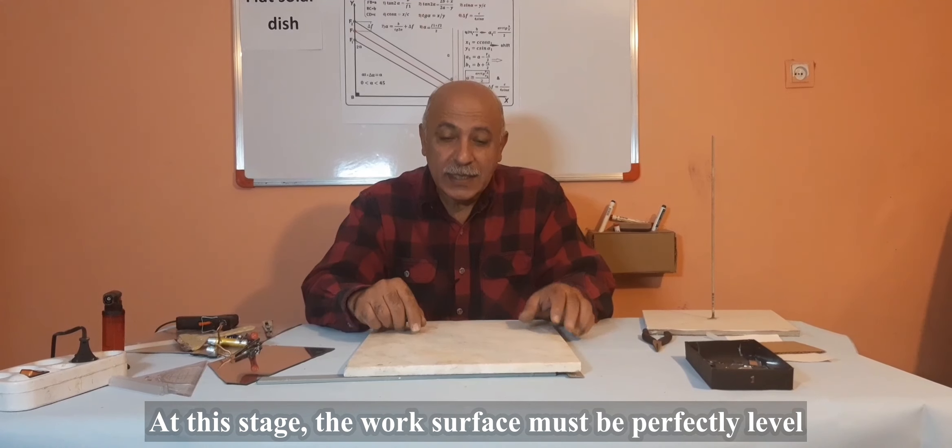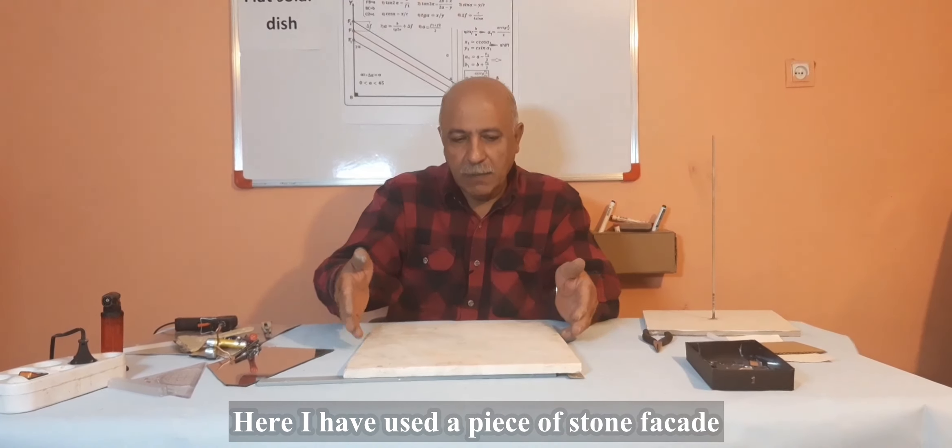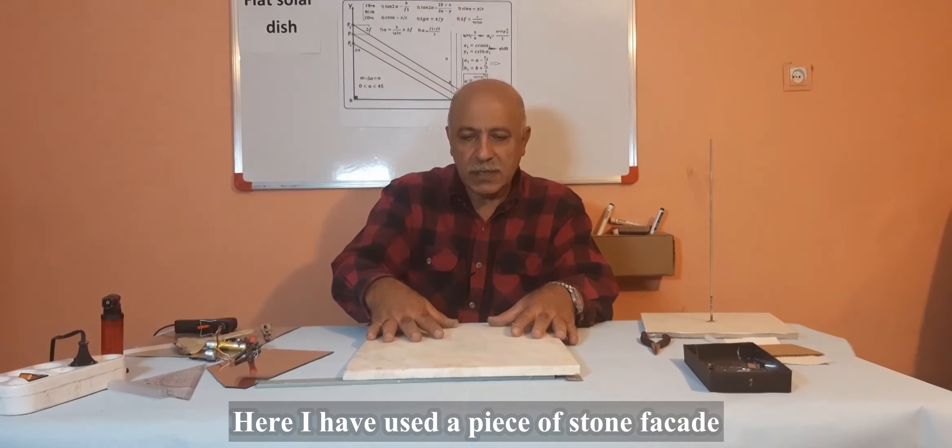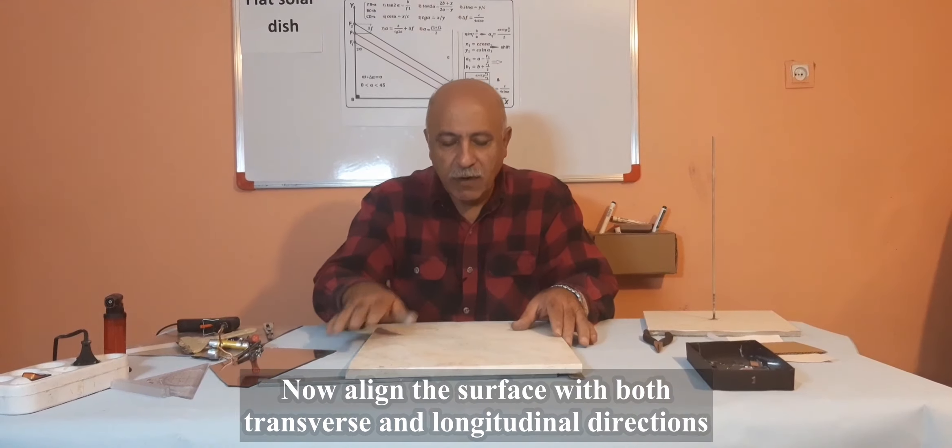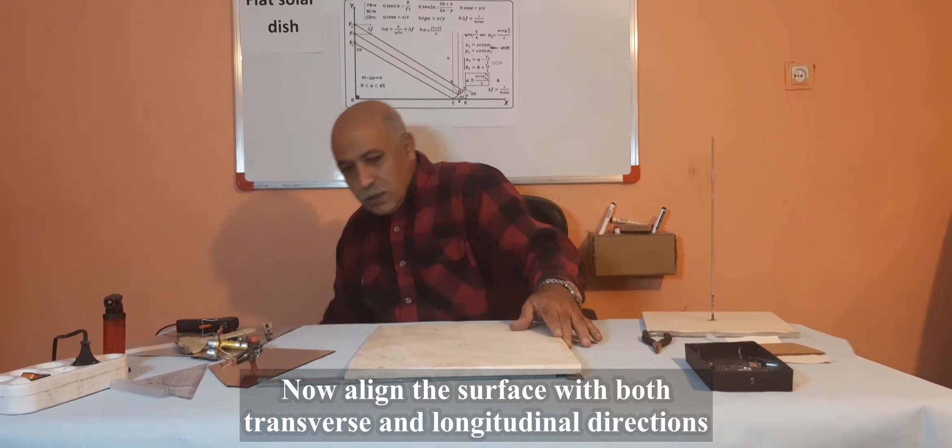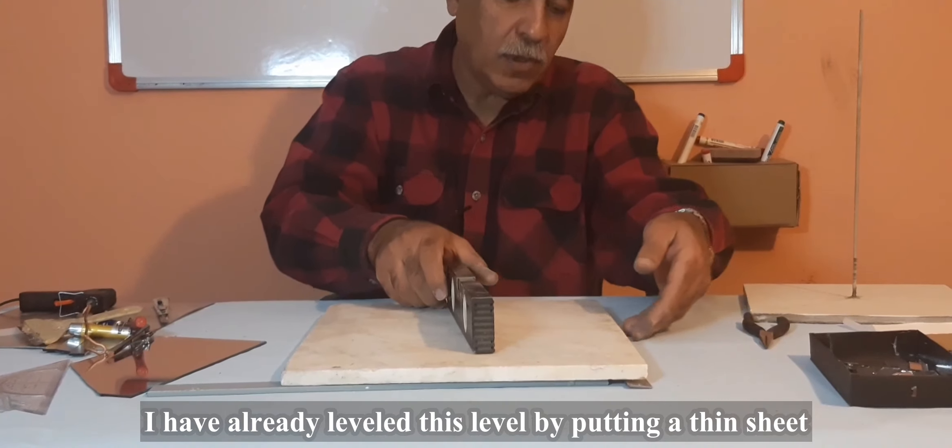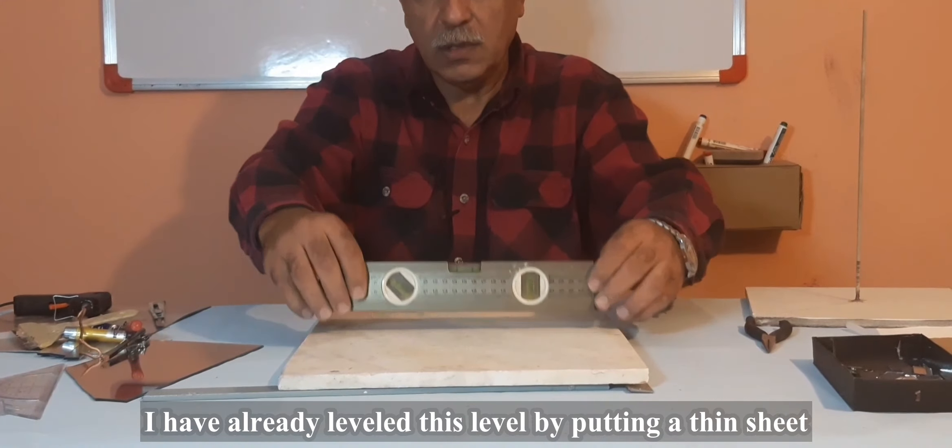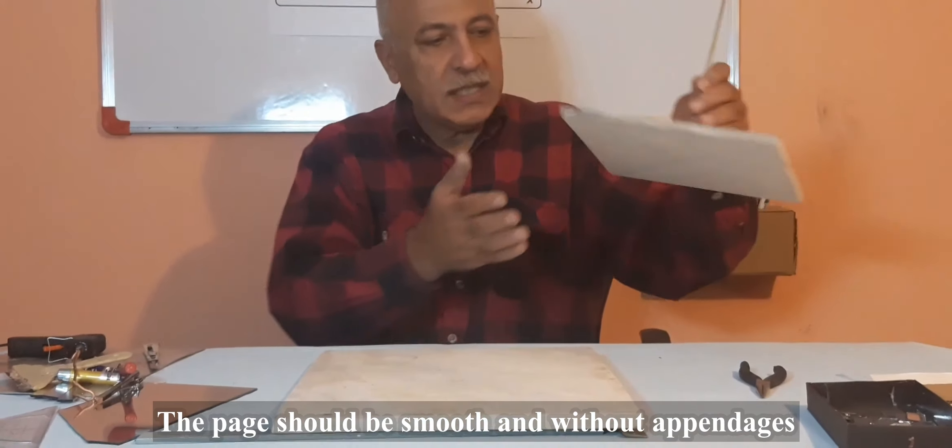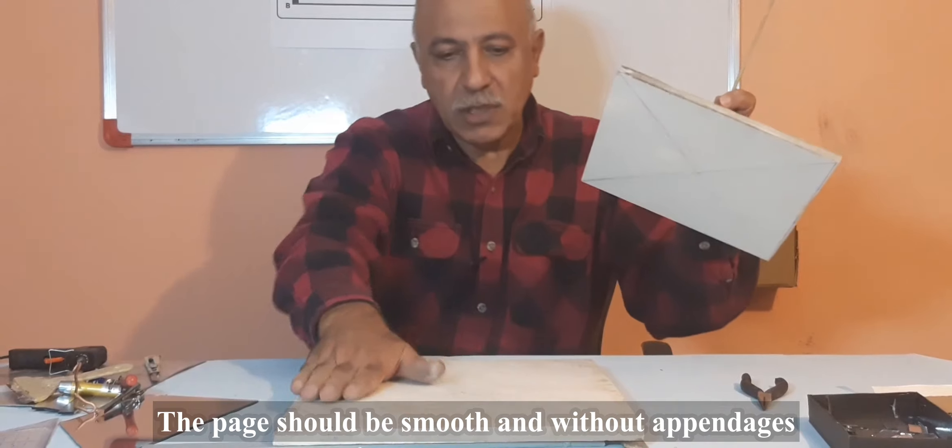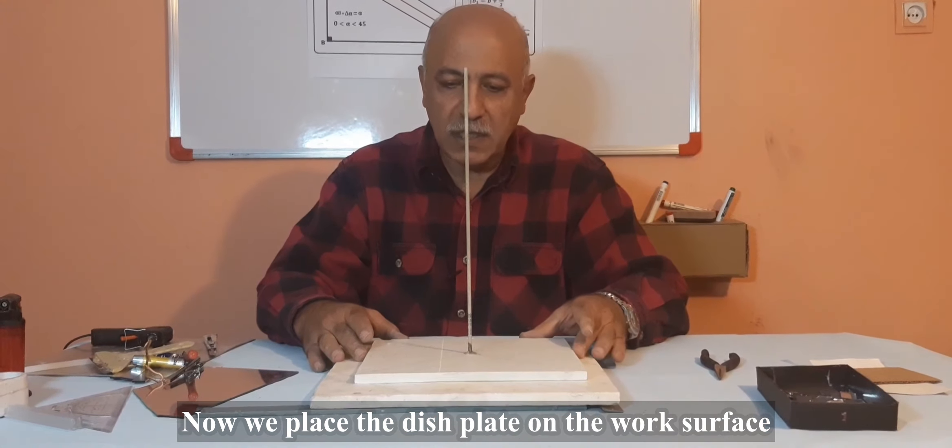At this stage, the work surface must be perfectly level. Here I have used a piece of stone. You can also use large ceramic. Now align the surface in both transverse and longitudinal directions. I have already leveled this by putting a thin sheet. The page should be smooth and without appendages. Now we place the disc plate on the work surface.